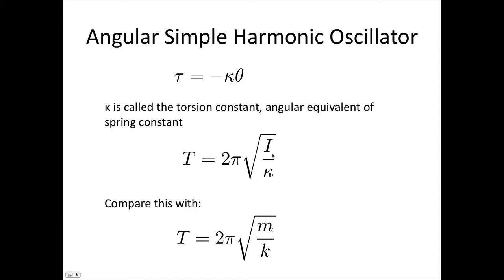I is the moment of inertia. So that's equivalent to the mass. And kappa, like we said, is the torsional constant, which is equivalent to the spring constant.